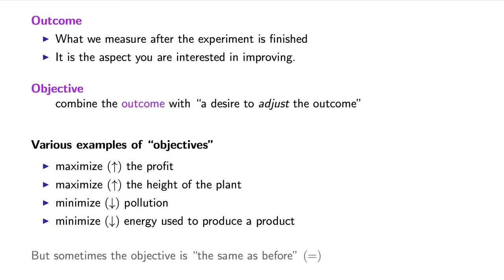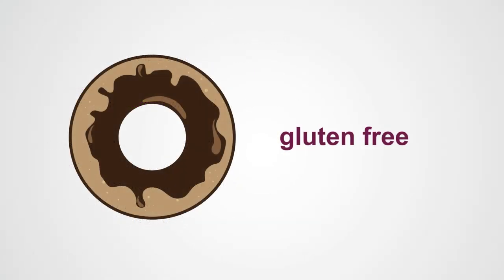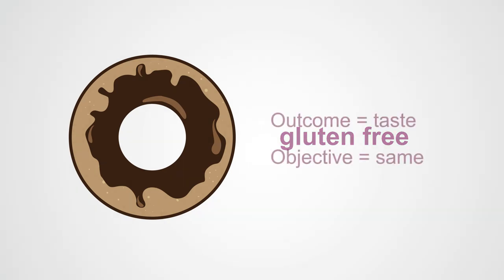but sometimes we want our outcome to remain the same even though we're changing the factors. For example, let's say you want to change your recipe for your favorite pastry to be gluten-free. Your objective is for the taste to be the same as the regular recipe. Your outcome is taste, and your objective is to keep it the same.